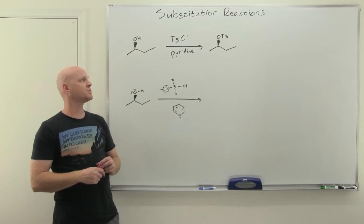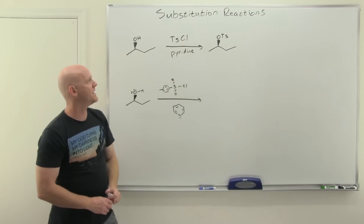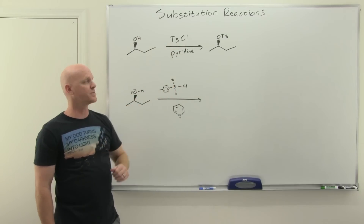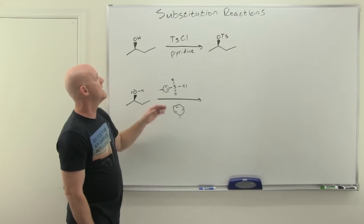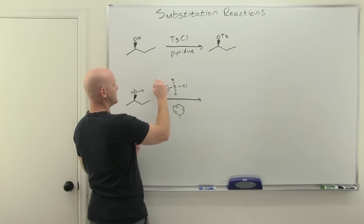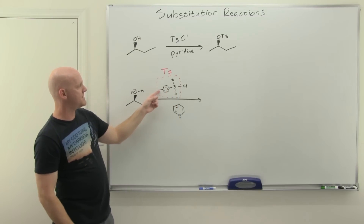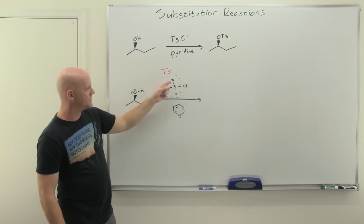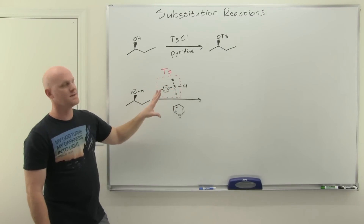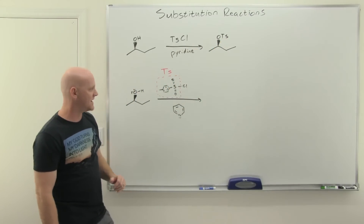The last substitution reaction for alcohols we'll look at is turning the hydroxy group into what's called a sulfonate ester — typically a toluene sulfonate ester. The reagent is tosyl chloride in pyridine, and pyridine serves a similar role to what we saw with PBr3 and SOCl2. Toluene sulfonyl chloride is often abbreviated as OTs, where toluene is methylbenzene and the sulfonyl group is a derivative of sulfonic acid. Because it's such a big moiety, it's easier to abbreviate it as OTs.